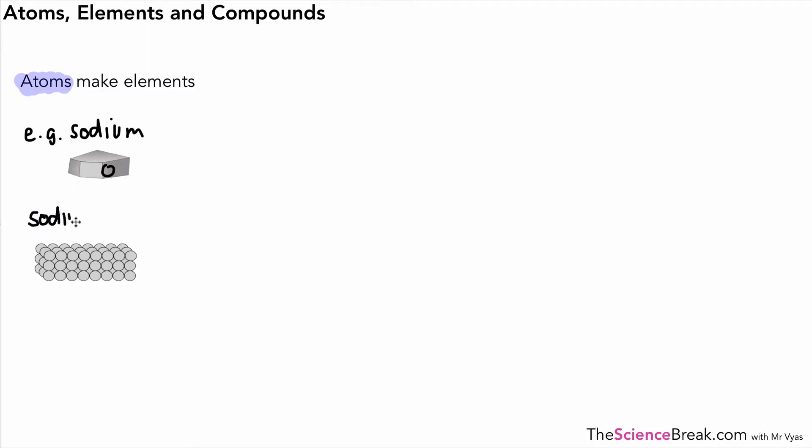These atoms are sodium atoms. You won't find any other atoms present in the element sodium. There's lots of those there neatly arranged, and we can say that atoms are the simplest part of an element that can exist.